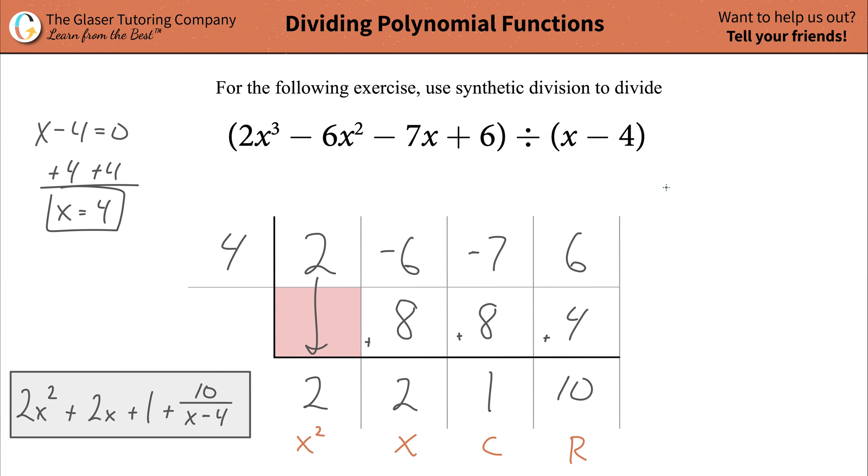In other words, it's going to be 2x cubed minus 6x squared minus 7x plus 6, all divided by x minus 4. And that better equal now 2x squared plus 2x plus 1, plus 10 over x minus 4.